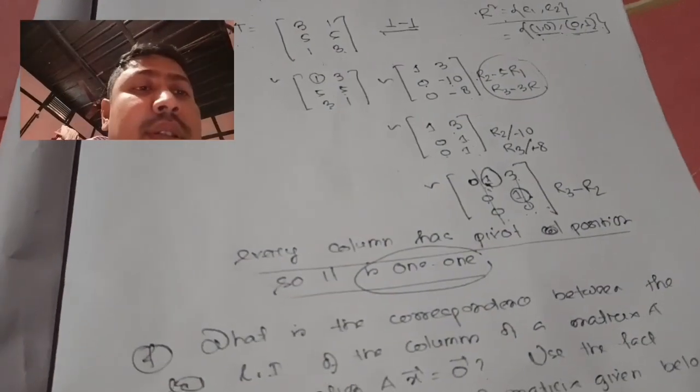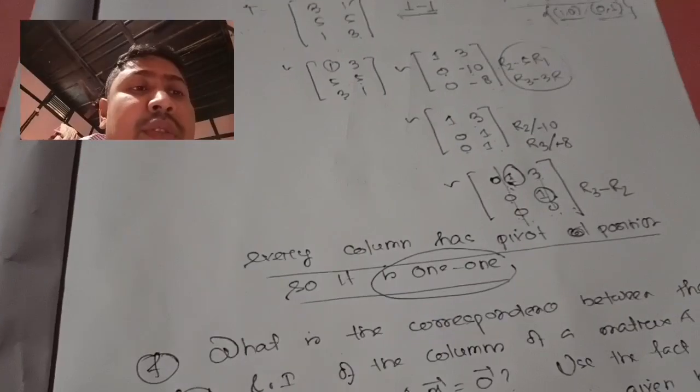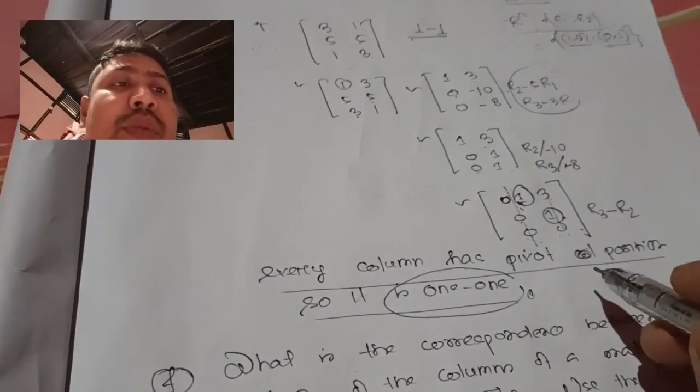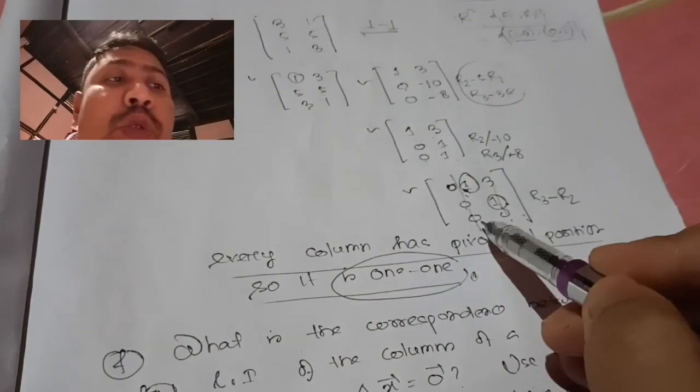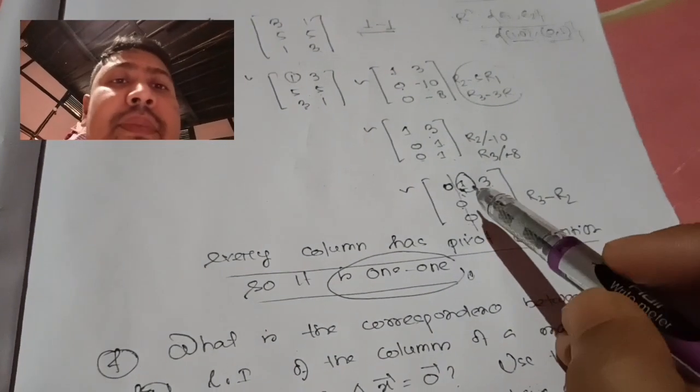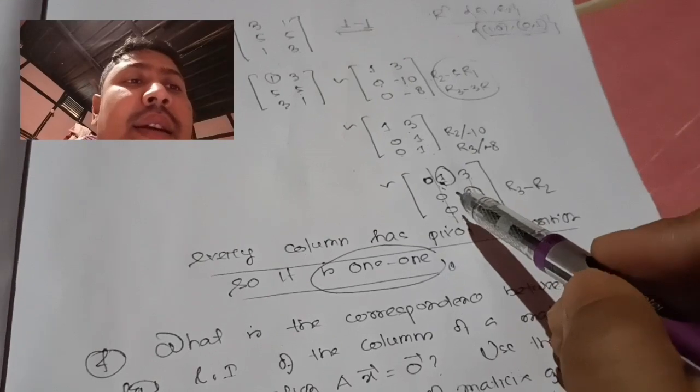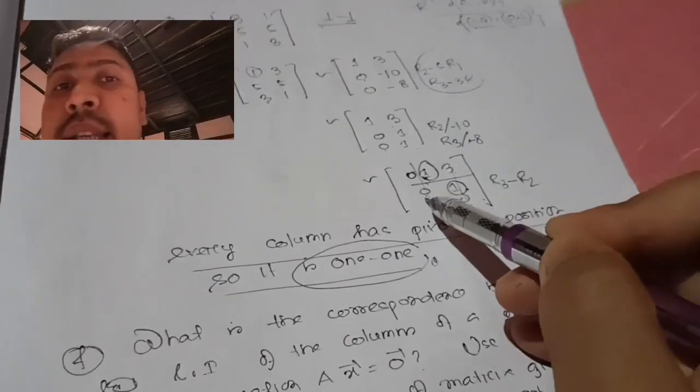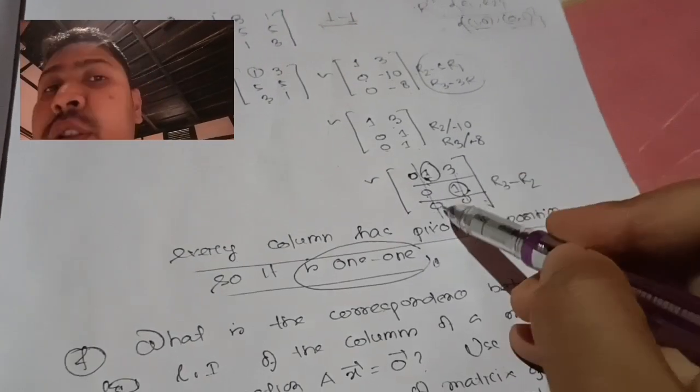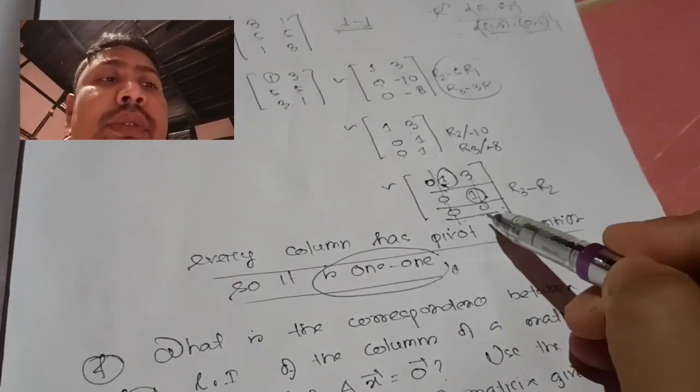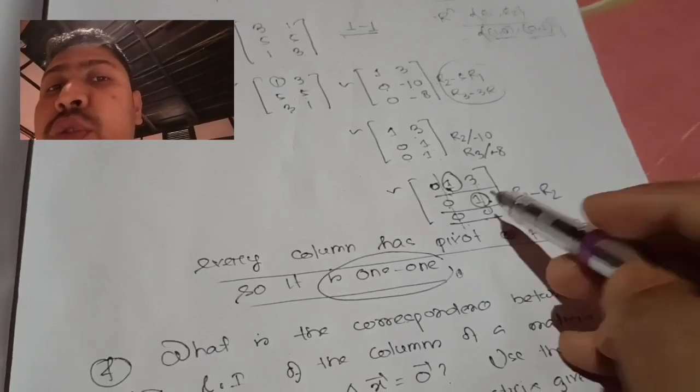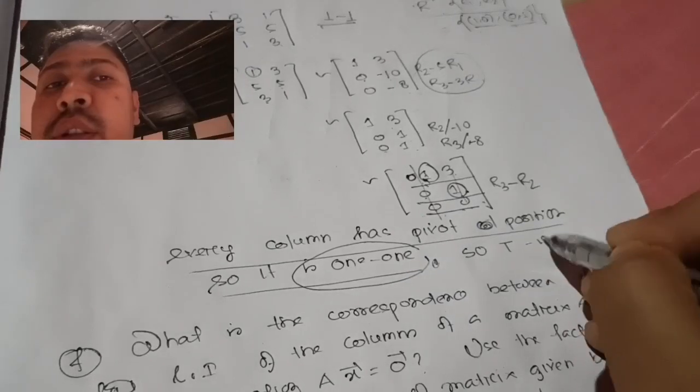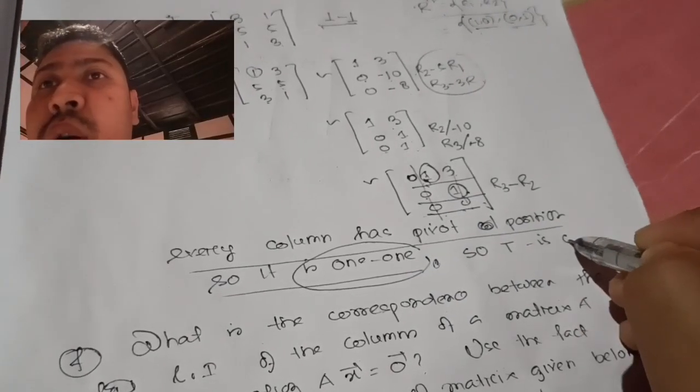Now checking onto: since there is a row of all zeros, the transformation is not onto.